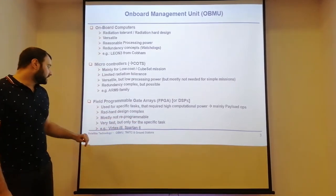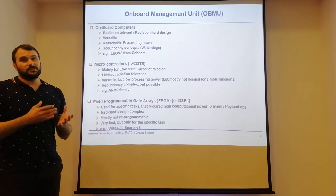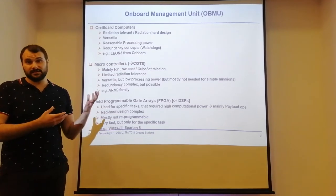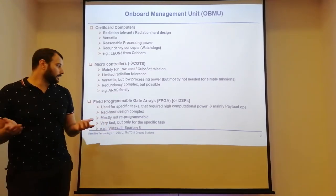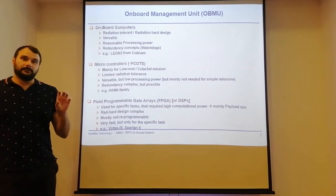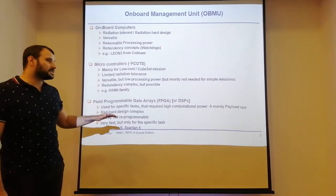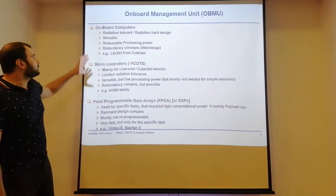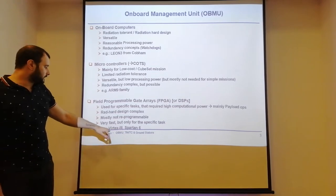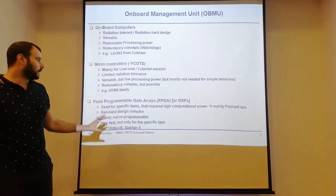This is the biggest disadvantage: if you want a radiation-hard design, you would choose an FPGA you cannot reprogram. You have to put significant effort into testing before you send it into space because you cannot fix this problem later on. FPGAs are very fast but can only be used for specific tasks—usually streaming or parallel processing tasks. Examples include the Rutex 3D tool or the Spartan 6 as a more recent FPGA type.